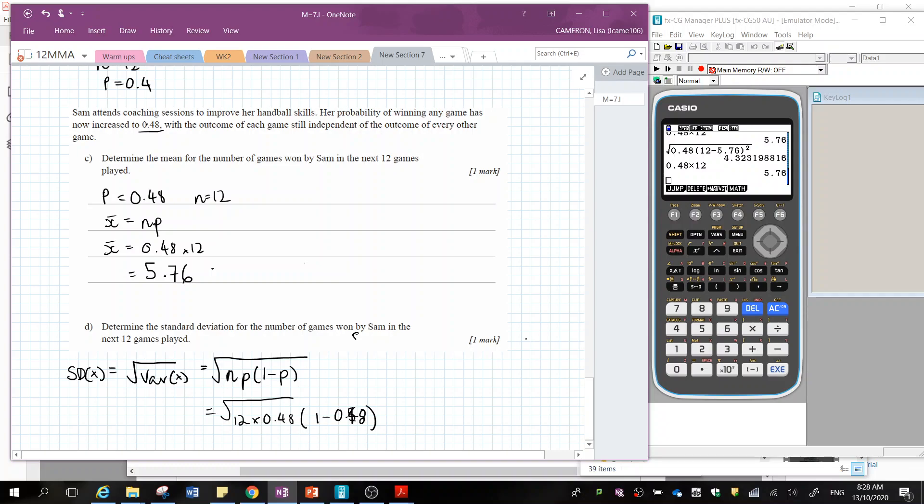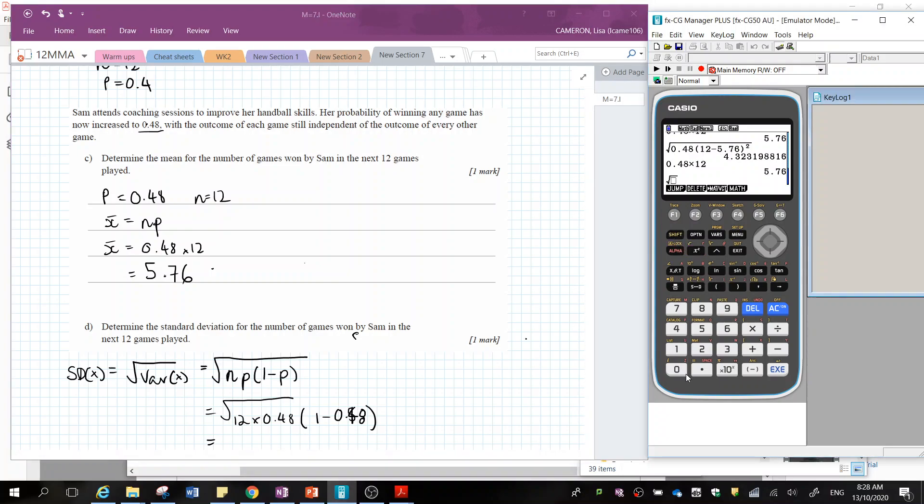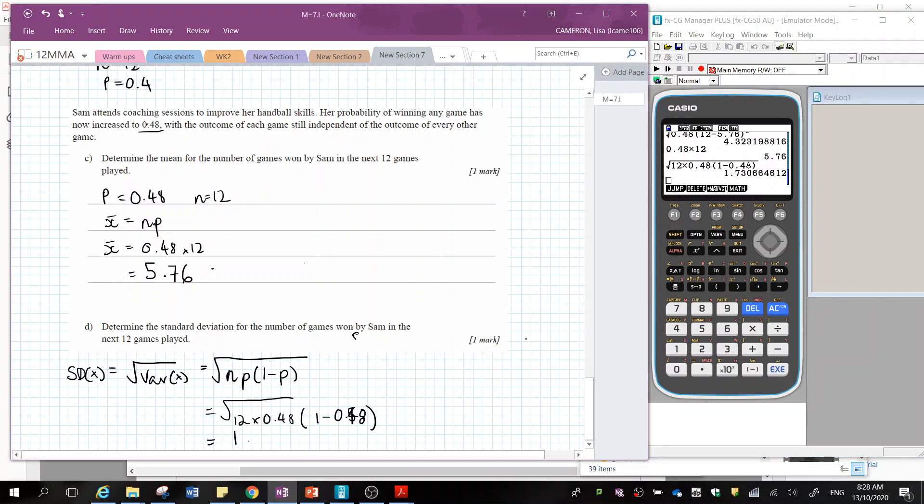Okay, so over in my calculator, square root of 12 times 0.48 bracket, 1 minus 0.48, bracket, execute, and I want it in a fraction form. So my standard deviation is 1.7307.